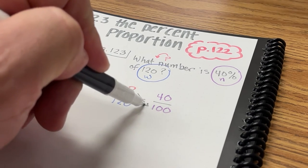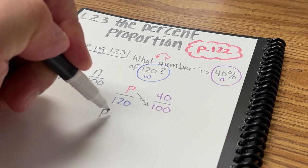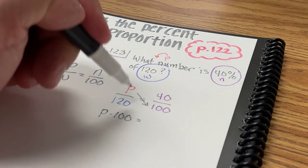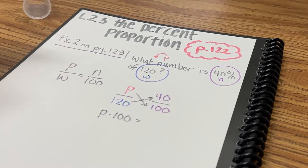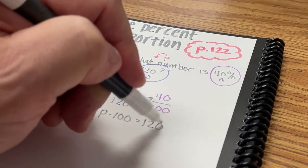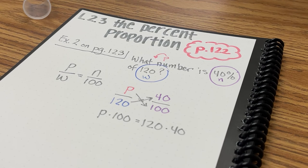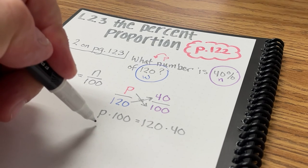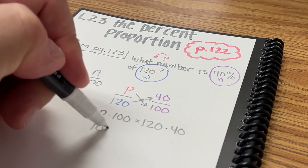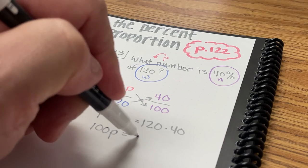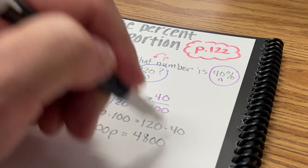I'm going to determine the cross products to figure out what P equals. So P times 100 equals 120 times 40. And if I simplify that, I'll get 100P equals 4800.